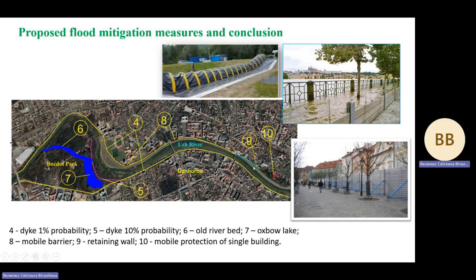A barrier height of approximately half a meter would be sufficient for such embankment sites. To protect some buildings in the Botanic Garden, the same mobile flood barrier is proposed, but at a height of two meters.